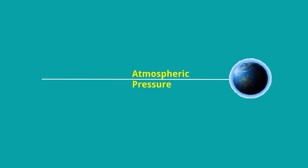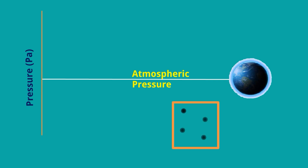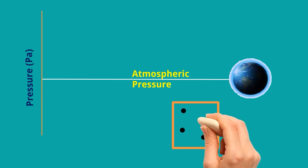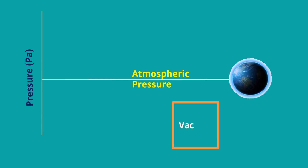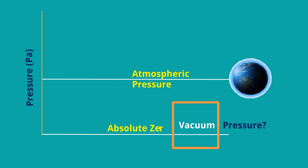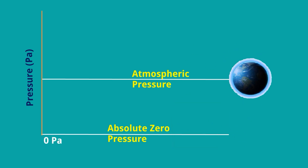See this graph — on the left side we are marking pressure in Pascal. The atmospheric pressure line is shown. If any container doesn't have any molecules, it will be vacuum, and the pressure there will be absolute zero pressure, because without molecules there is no colliding action or force on the wall. So absolute zero pressure means zero Pascal, and atmospheric pressure is 101,325 Pascal.